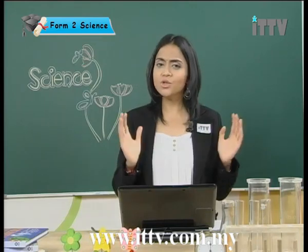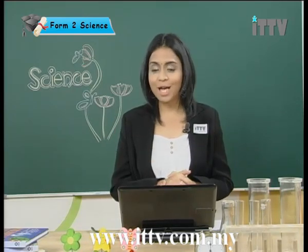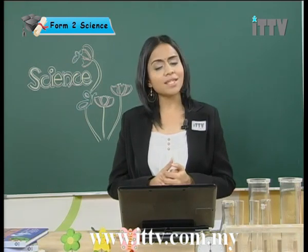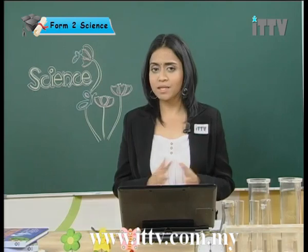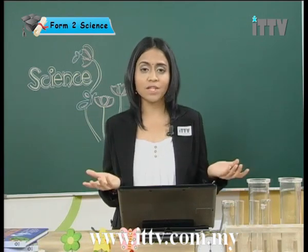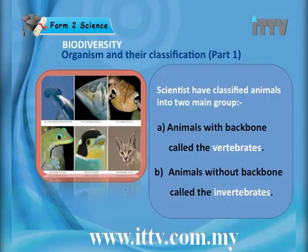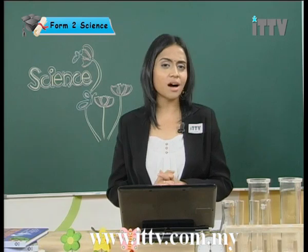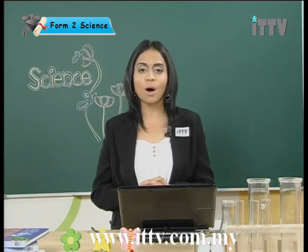Scientists have so far discovered one million living species of animals — how many more remain a mystery. Scientists have classified animals into two main groups: firstly, animals with a backbone called vertebrates, and animals without a backbone called invertebrates. Today's lesson covers the invertebrates, and the next lesson will cover the vertebrates.